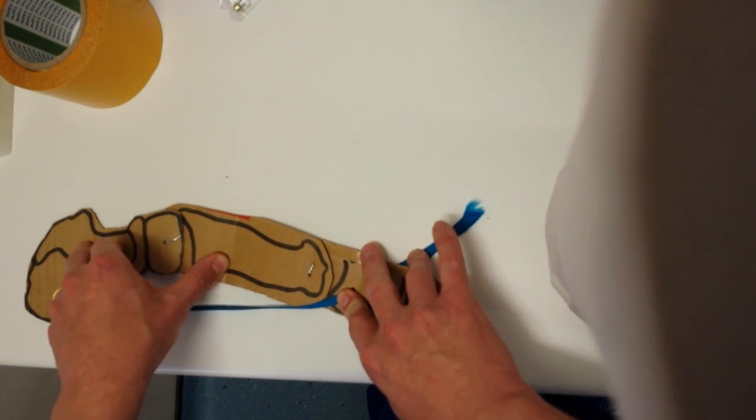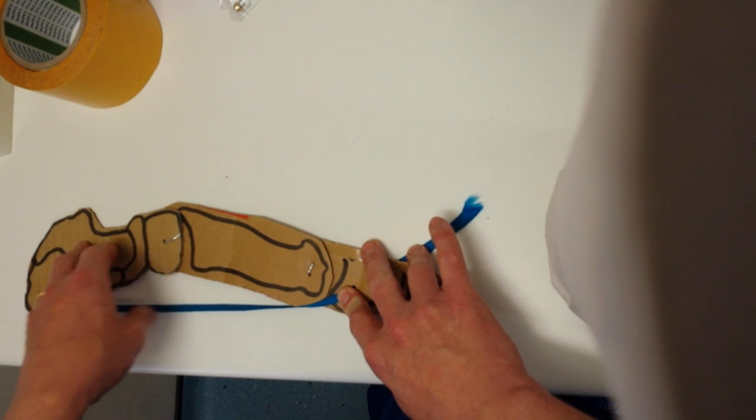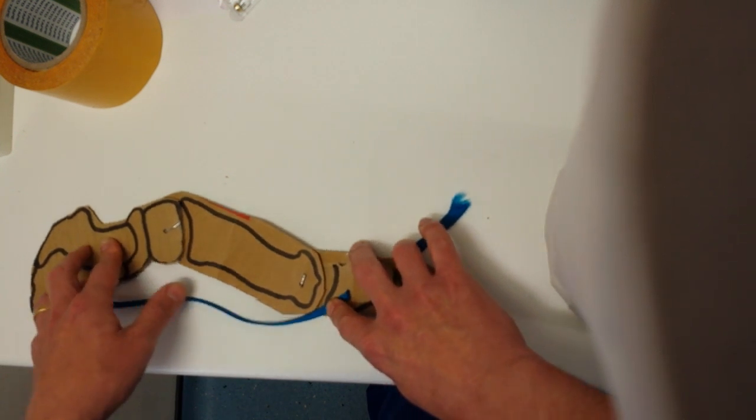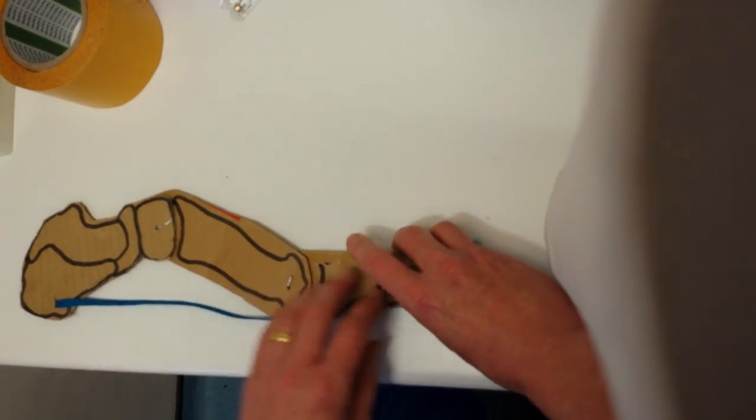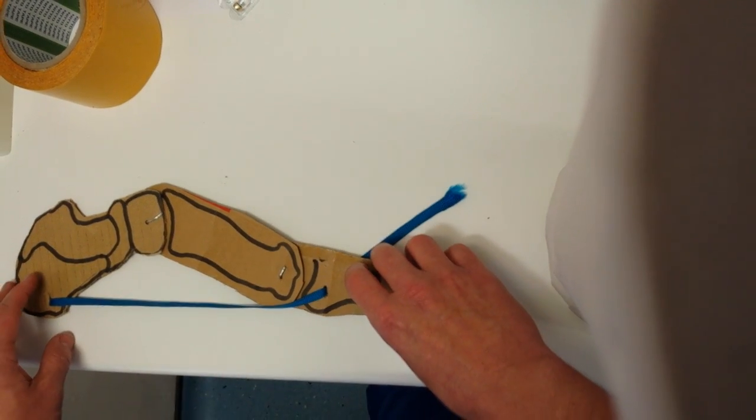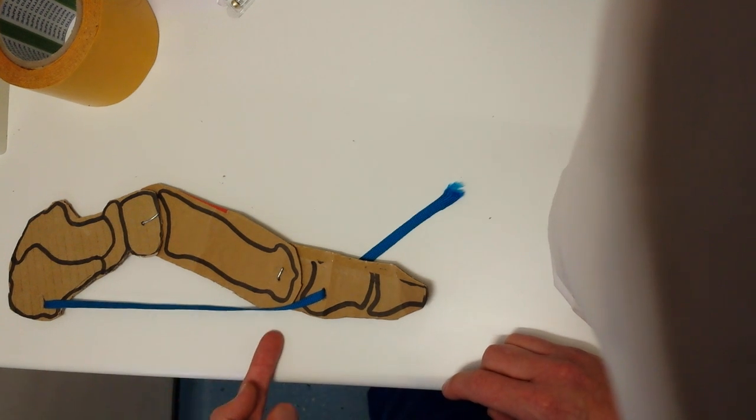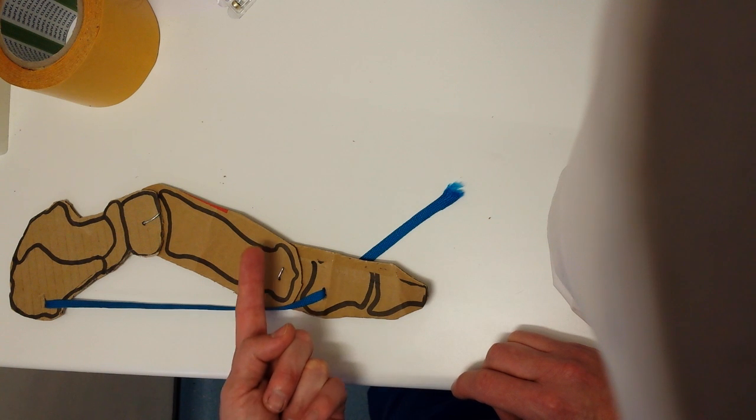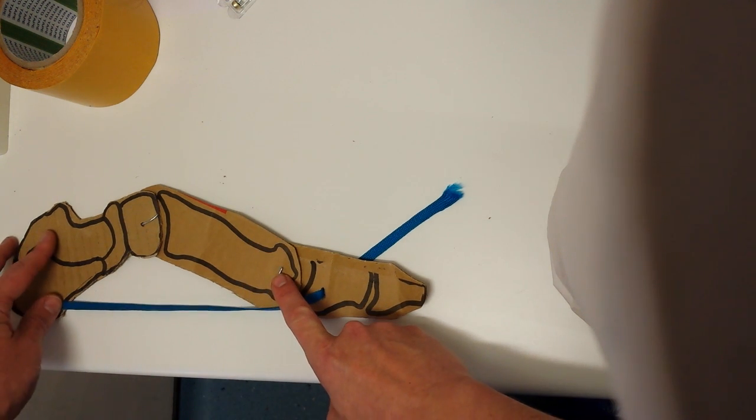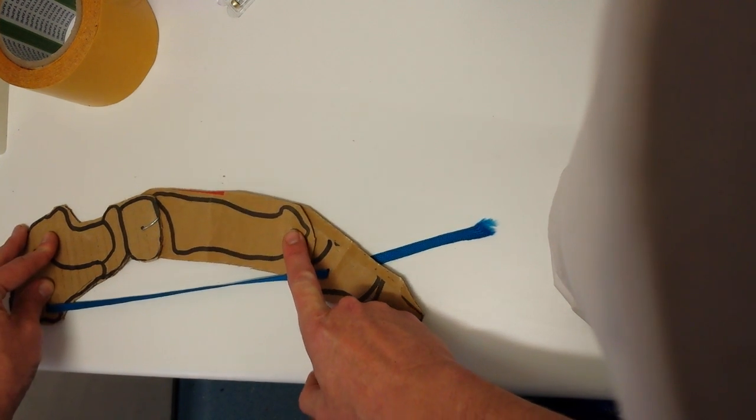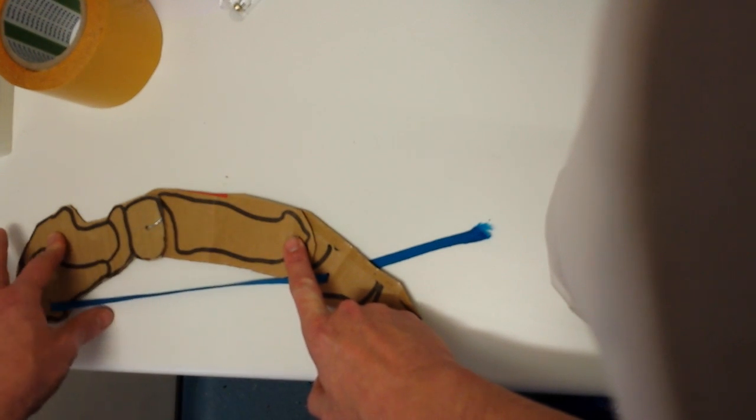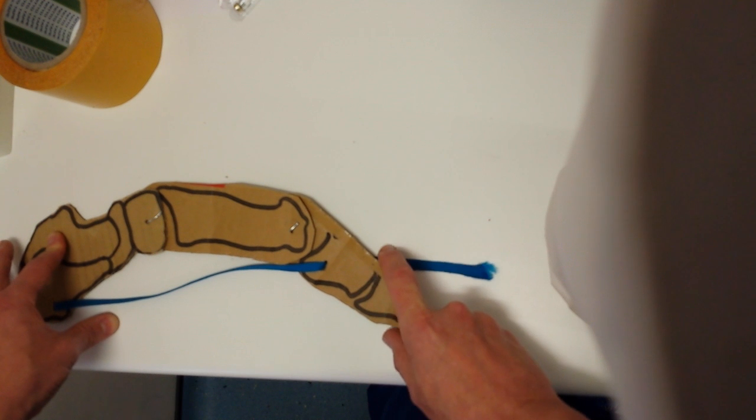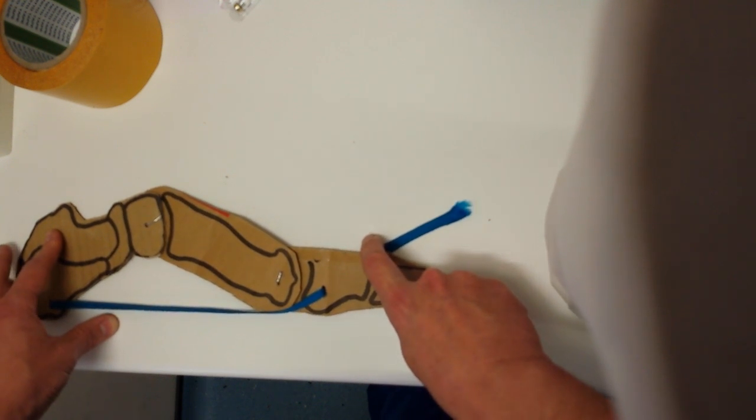So to actually bend that becomes very difficult because the plantar fascia is pulling it down as I'm trying to pull it up. So when you are standing up, what defines the tension in the plantar fascia is to a large degree the amount of force under the first met head. The more force there is trying to dorsiflex the first met head, the tighter this will be and the more this will limit the dorsiflexion of the big toe, hence functional hallux limitus.